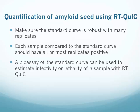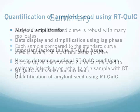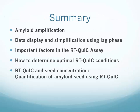The RT-QUIC assay is really versatile. It can be used to tell whether or not a sample is positive, or you can take it a step further and use a reaction rate to determine how positive that sample is compared to another positive sample. In summary, I've told you the basics of amyloid amplification and how that applies to the RT-QUIC assay. I've shown you how to simplify data displays using lag phase or reaction rates, described important factors in the RT-QUIC assay, set up a plan for determining optimal reaction conditions, and shown how to use lag phase or reaction rate to estimate the concentration of an amyloid seed using RT-QUIC.